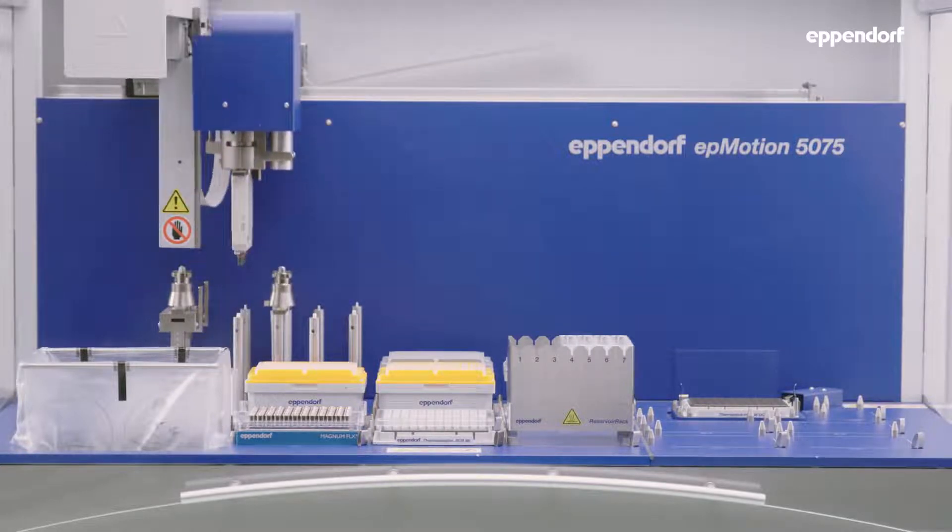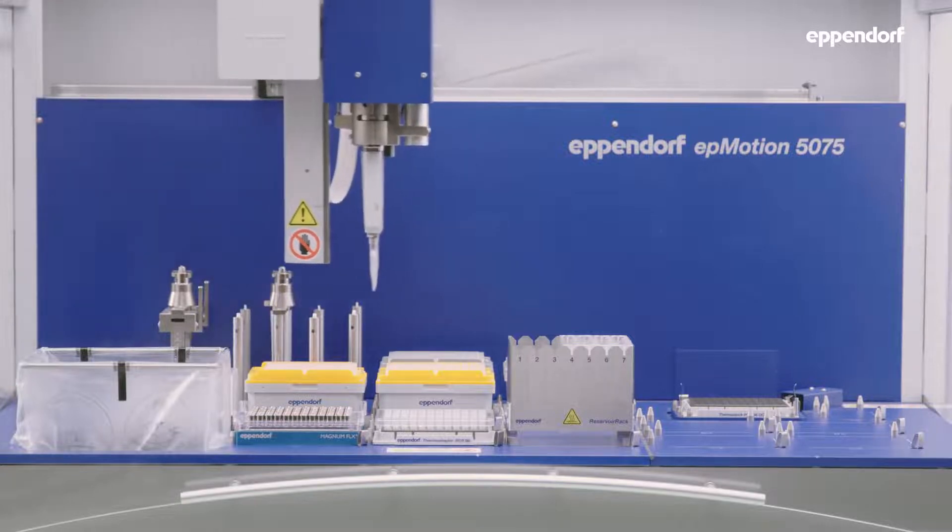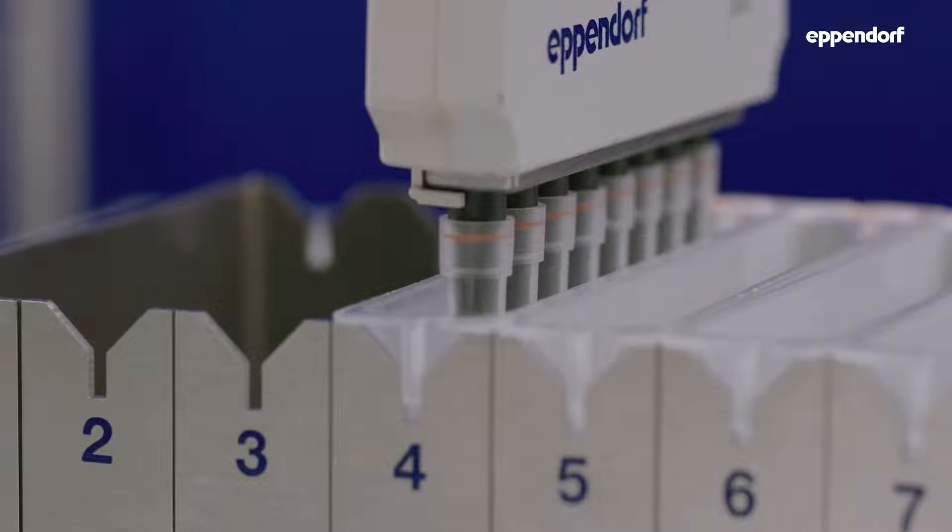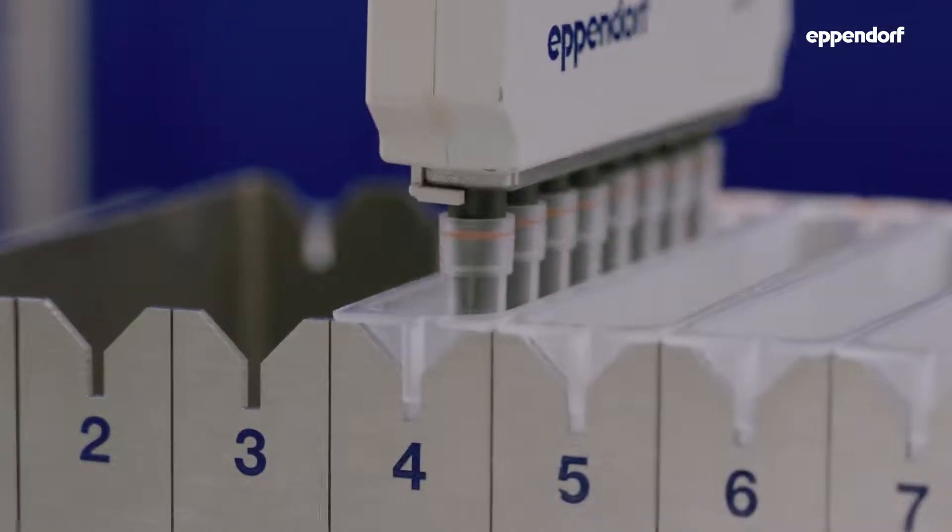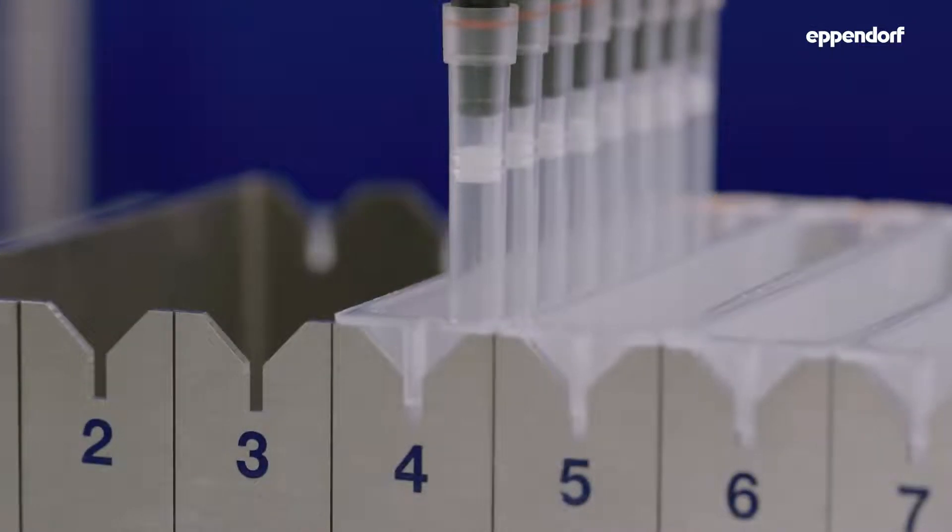In the first step of the bead cleanup, beads are added to the samples. By first tip mixing the bead solution in the reservoir, the beads get homogeneously distributed in the liquid so that equal amounts of beads can be transferred to each sample.